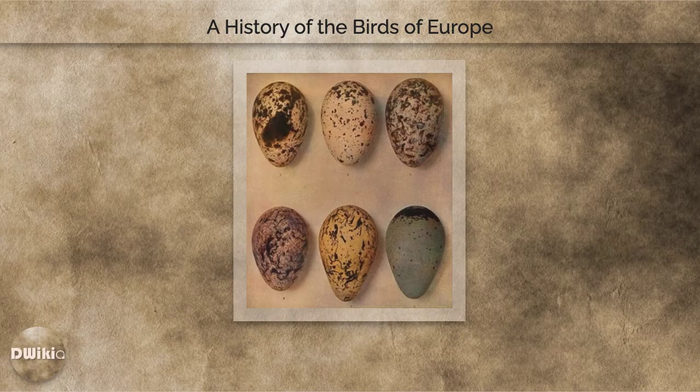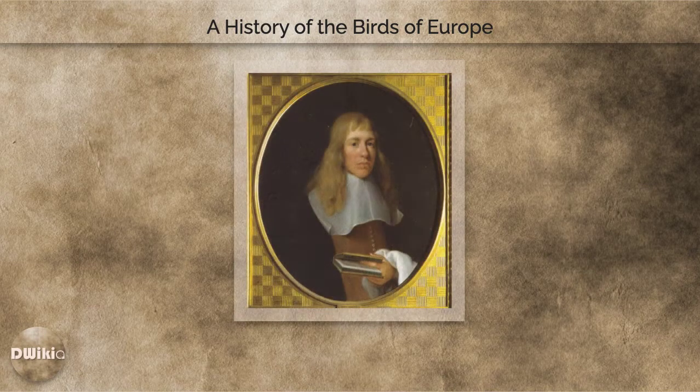The pioneering ornithological work of John Ray and Francis Willoughby in the 17th century had introduced an effective classification system based on anatomical features, and a dichotomous key to help readers identify birds. This was followed by other English-language ornithologies, notably John Gould's five-volume Birds of Europe published between 1832 and 1837.